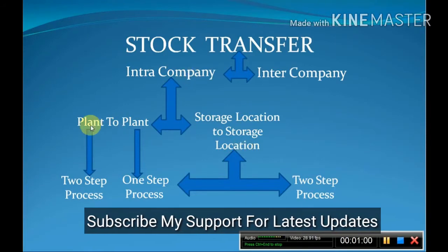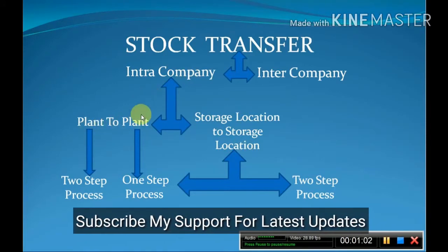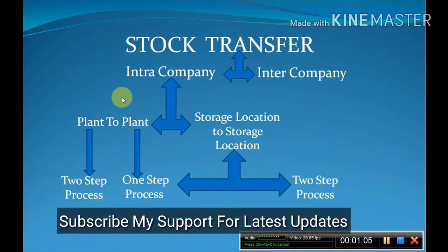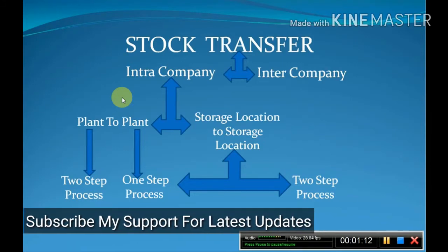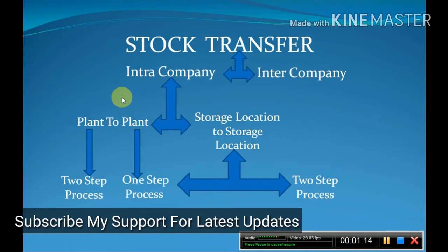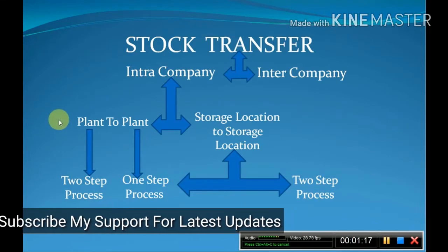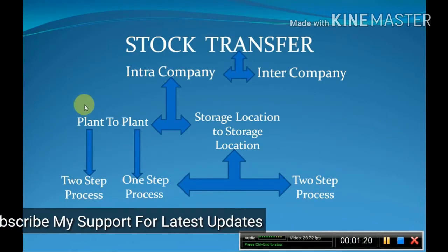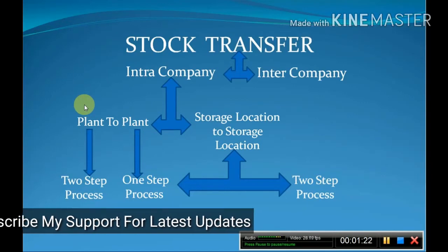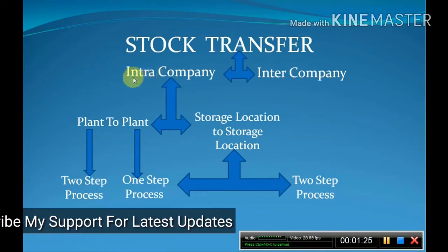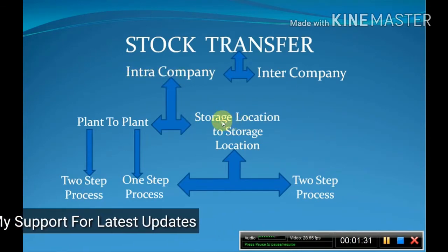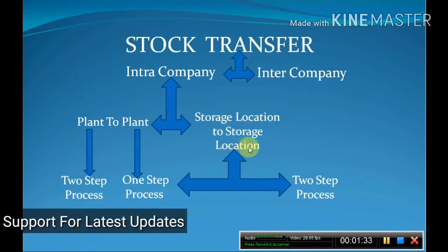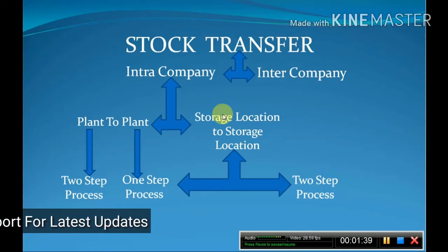For example, in plant-to-plant transfer, suppose we have two plants — plant code 1000 and plant code 1001. We have to transfer material from plant 1000 to plant 1001 within one company code; this is called intra-company. In the case of storage location to storage location transfer, it is within one plant.